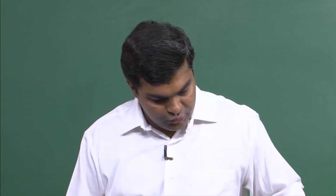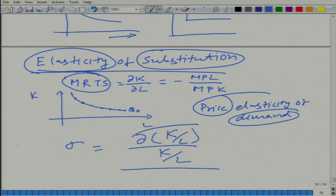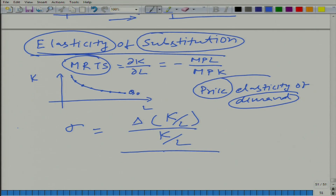In this context, elasticity of substitution is the proportional change in the inputs being used — specifically, the proportional change in the ratio K/L with respect to the proportional change in MRTS. I am taking the absolute value of MRTS because MRTS is negative, so I take the proportional value of MRTS.